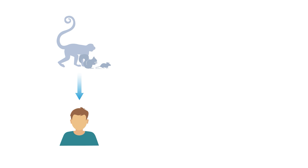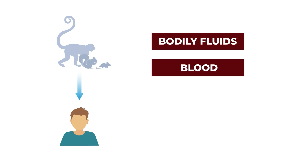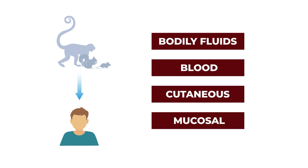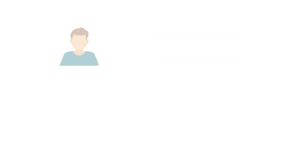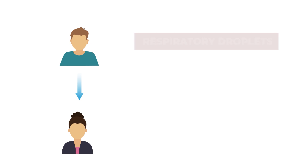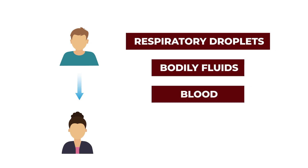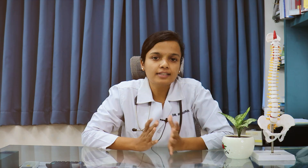Monkeypox is transmitted from animals to humans and from humans to humans. Animal-to-human transmission occurs through body fluid, blood, and cutaneous and mucosal secretions. Human-to-human transmission occurs through respiratory droplets, body fluid, blood, and contaminated wounds via direct contact. Through indirect contact, it is transmitted via contaminated objects like handkerchiefs and mobile phones.